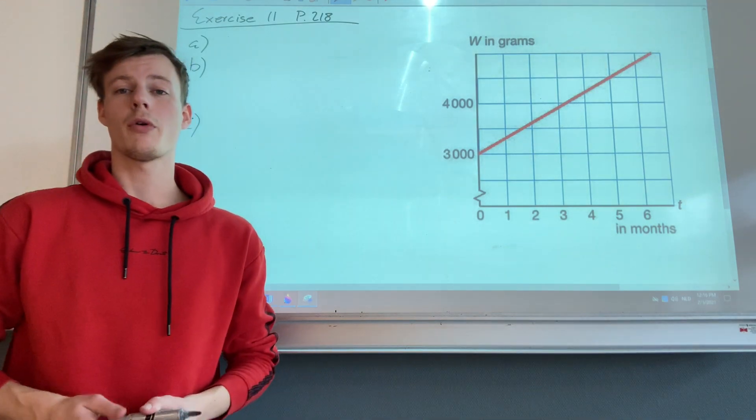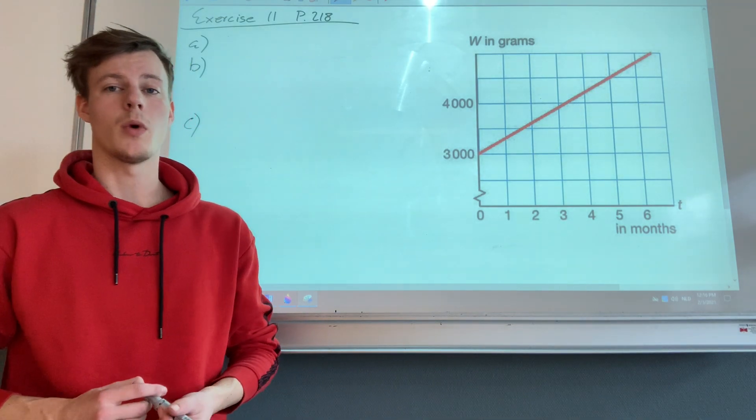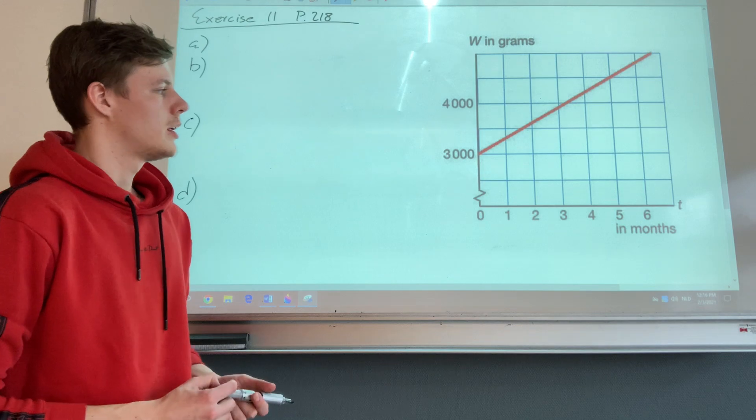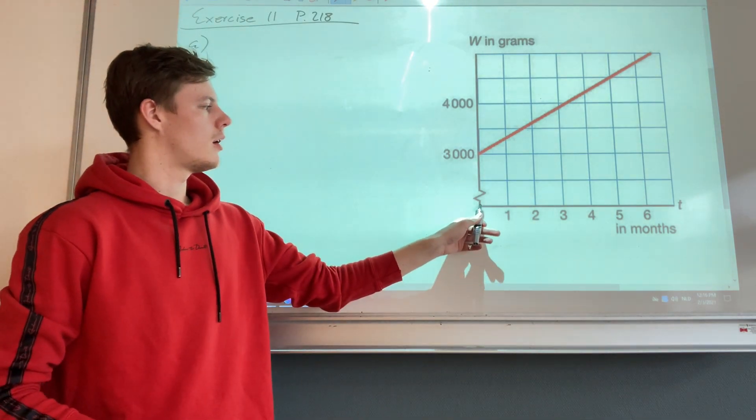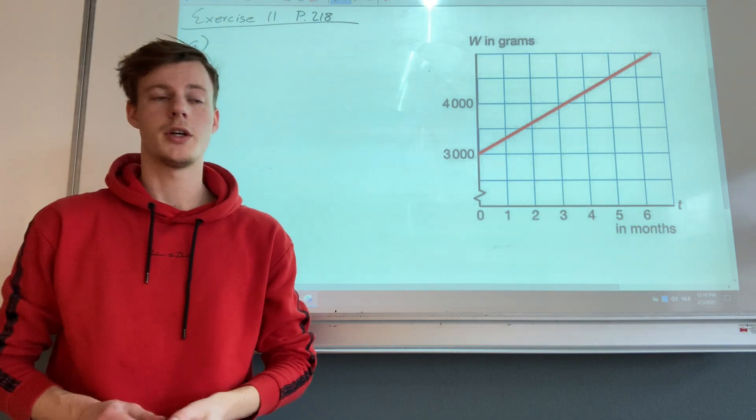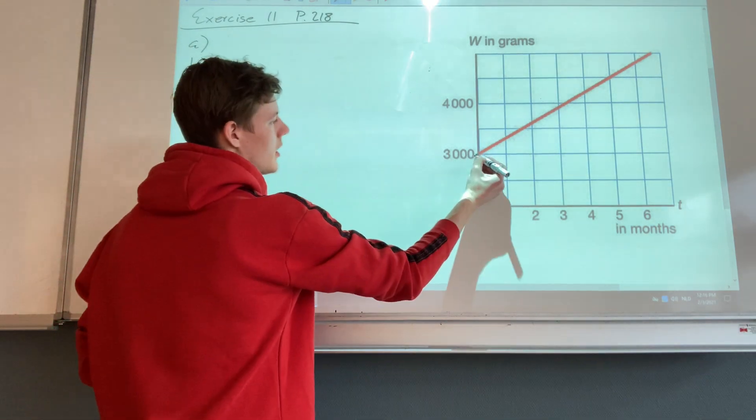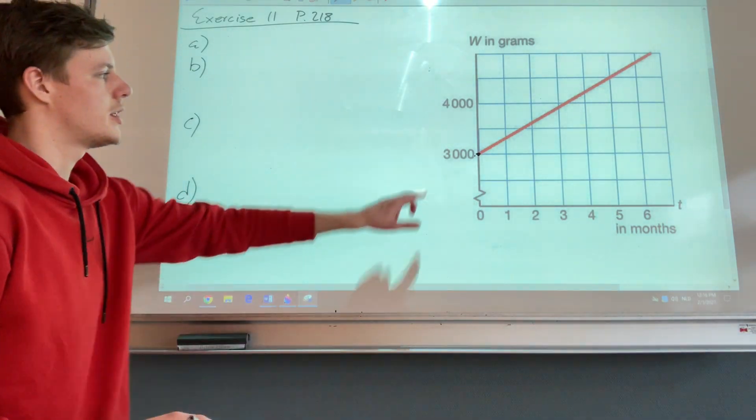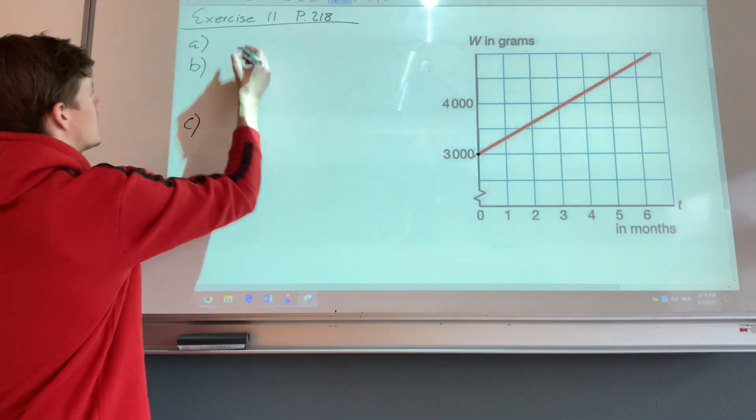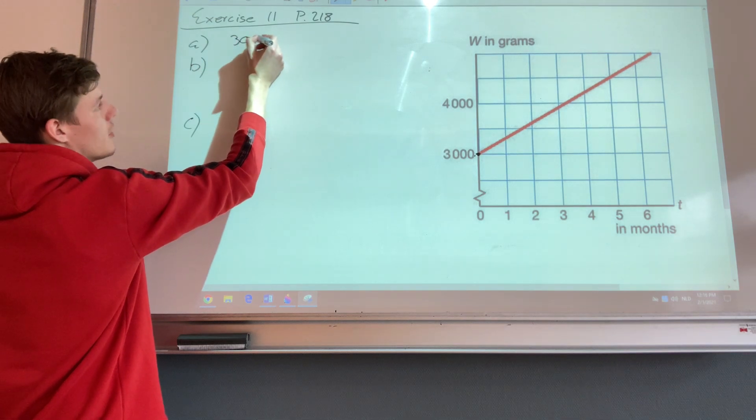Well, the birth weight is the weight when someone is born, so of course in this graph that will be at the moment t is zero. So the y-intercept gives information about the birth weight, which in this case is 3,000. You can just fill that in.